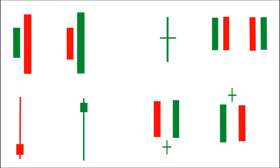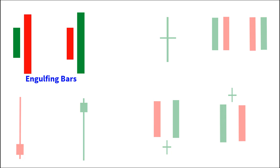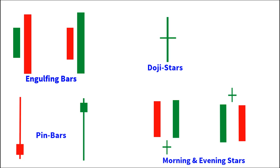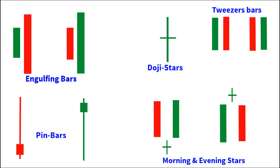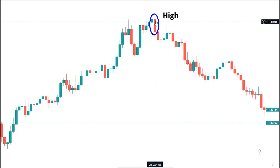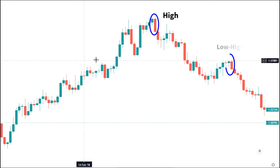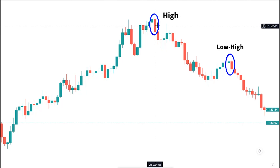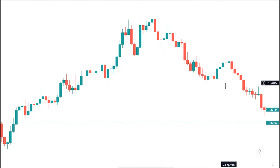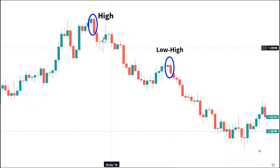These 5 powerful price action candlestick patterns are: the engulfing bar, the pin bars, the doji stars, the morning and evening stars, and the tweezers bars. The engulfing bars can exist as the bearish engulfing bars and the bullish engulfing. This is a powerful candlestick pattern you need to know how to implement for trade opportunities in the market. The bearish engulfing can form at the high of a bullish trend or at a swing low high in a bearish trend, and whenever it does, it signifies a potential bullish reversal of trend to the bearish side, or for continuation of a bearish trend at a low high swing.